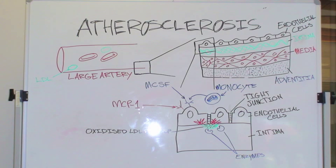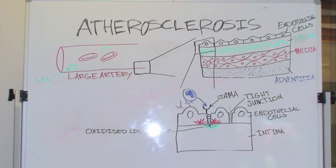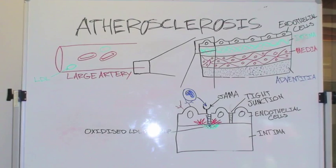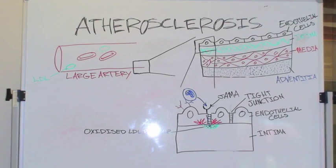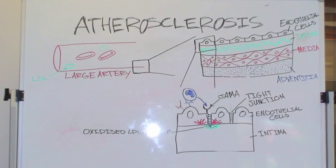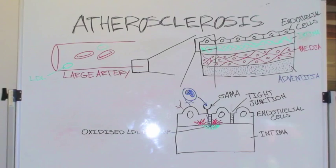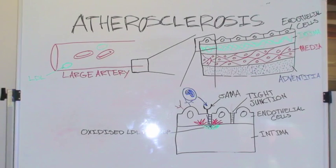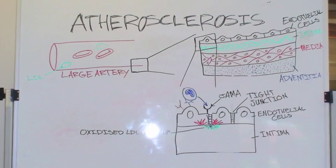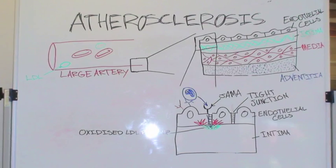This causes monocytes in the bloodstream to undergo marginalization, endothelial rolling, adhesion, and then migration through the endothelium. This process is mediated by selectins, integrins, and vascular adhesion molecule 1. The monocytes migrate across the endothelium into the subendothelial space in the intima via junctional adhesion molecule A and platelet adhesion molecule, which are expressed on leukocytes and concentrated at endothelium cell-to-cell contact junctions.